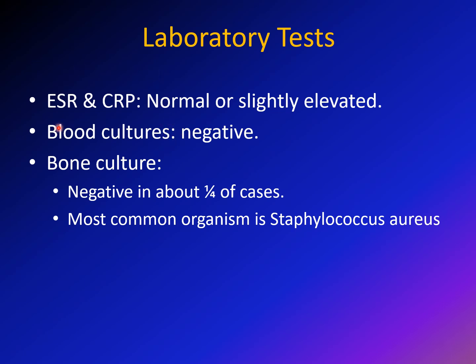Laboratory tests: ESR and C-reactive protein are usually normal, sometimes slightly elevated. Blood cultures are negative. Bone cultures will be negative in about 25% of cases; in 75% they are positive, with the most common organism being Staph aureus.